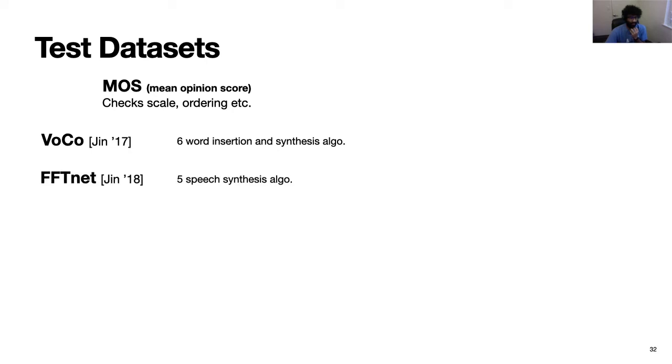So after we train our metric, we want to evaluate our metric with human subjective ratings, MOS, which stands for mean opinion scores. We want to do this across a large dataset of audio similarity problems. So we look at three datasets. The first one is VoCo, which is a word insertion and synthesis dataset. Next, we look at FFTNet, which is a deep learning-based speech synthesis dataset. So in both these datasets, there is a big perceptual difference between these different algorithms. And in both these datasets, we have pairs of signals that are not time aligned. The third task is that of bandwidth expansion, which is the task of expanding the frequency range of the signal.